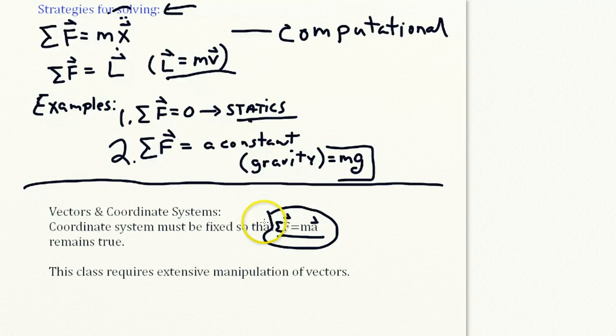One can construct a coordinate system that's not fixed, and if you do so and you measure the sum of all the forces and the accelerations, they will not be equal.